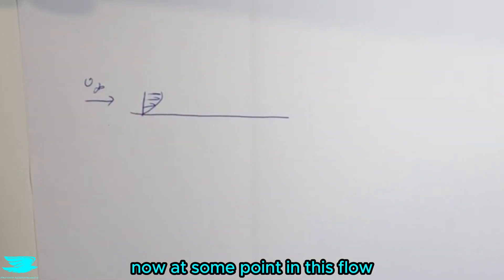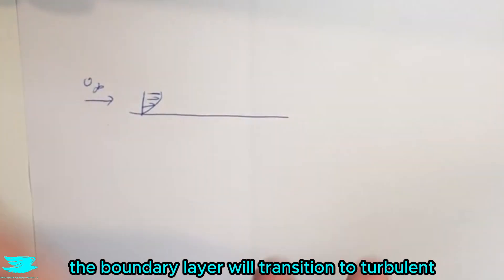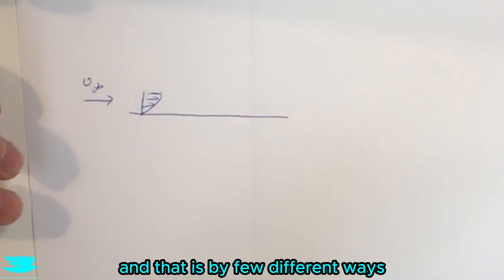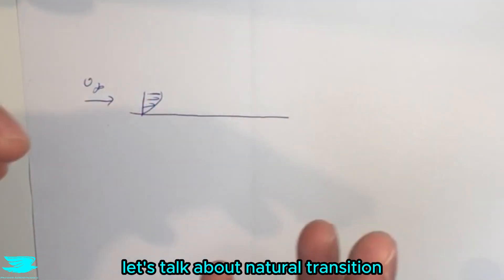Now at some point in this flow the boundary layer will transition to turbulence. That is by a few different ways but let's talk about natural transition.